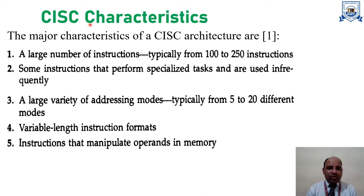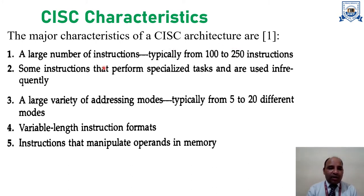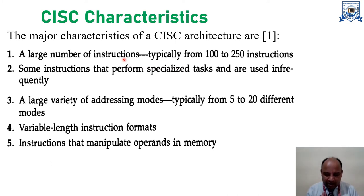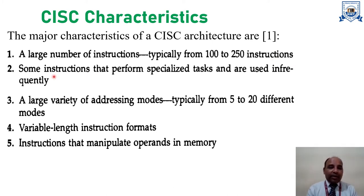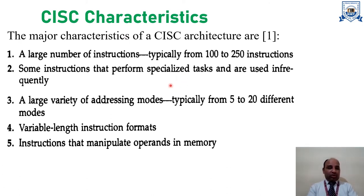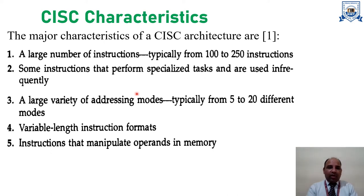This slide shows the different characteristics of a CISC computer. First, CISC computers are large in the number of instructions — to accommodate different and sophisticated kinds of applications, they typically range from 100 to 250 instructions, and in modern or large computers it may be beyond that. Second, some instructions perform specialized tasks dedicated to particular applications.